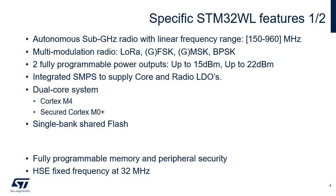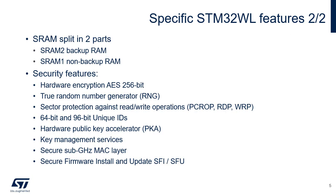In terms of architecture, the STM32WL series is available through two product lines. One is based on a single-core Cortex-M4 architecture, whereas the other is a dual-core architecture based on ARM Cortex-M4 and M0+. Both product lines benefit from safety and security features. Only the dual-core version enables advanced security features such as key management services, a securable sub-gigahertz MAC layer, and secure firmware install and update capabilities.